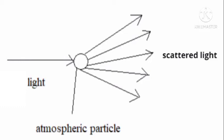Air also has different particles of dust, gases, and water vapor. When sunlight falls on these particles, they scatter the light, and due to that, during sunrise and sunset we can see different colors in the sky. This is the reason behind why we see different colors during sunrise and sunset.